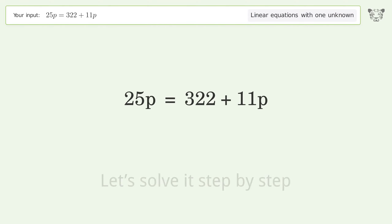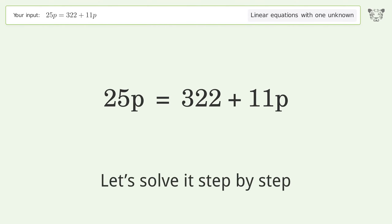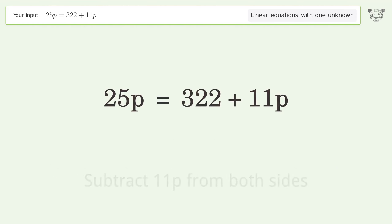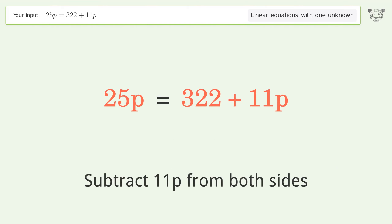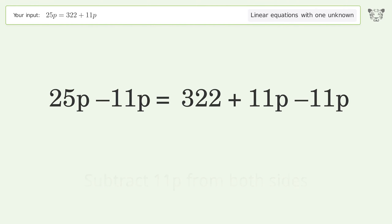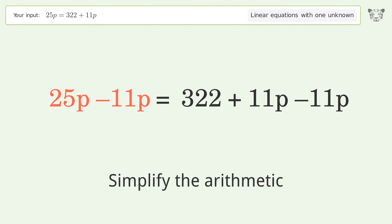Let's solve it step by step. Group all p terms on the left side of the equation by subtracting 11p from both sides, then simplify the arithmetic.